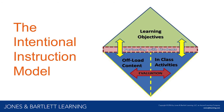Let me take a few minutes to talk about the Intentional Instruction Model. At the top of the model in green, you'll see learning objectives — all must flow from these. We can use lower-ordered learning objectives to help students master content at a more basic level, and save higher-ordered learning objectives for class time when we're there to help. Per Bloom's Taxonomy, lower-ordered objectives ask students to name, explain, describe — to remember and understand content at a rudimentary level. Higher-ordered objectives ask students to examine, illustrate, compare and contrast, justify, prioritize, plan, apply, analyze, evaluate, and create new ideas.